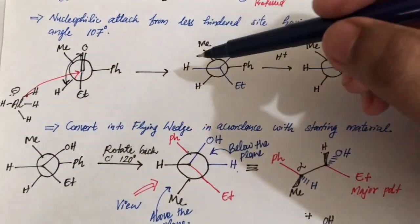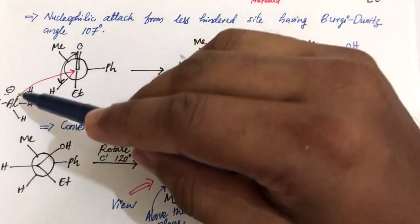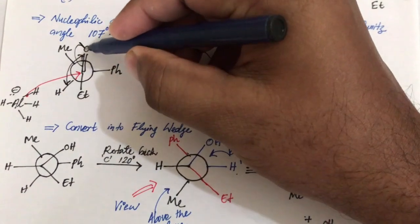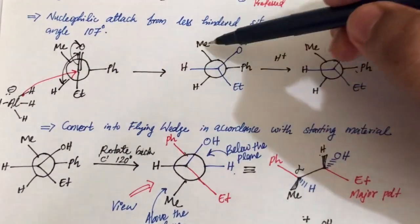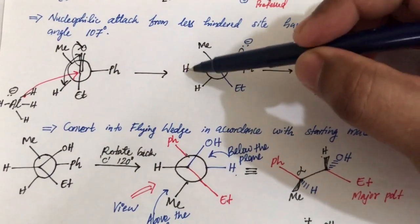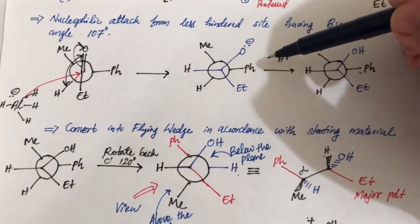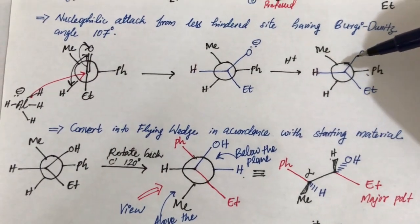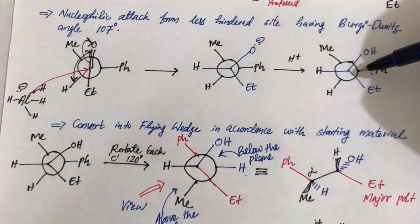The nucleophile attacks and this bond shifts. There is no change in the back carbon — it still has Me, Ph, and H. The incoming nucleophile hydrogen bonds to carbon, giving an alkoxide O⁻. On protonation, we obtain our product. However, we need to express this product in flying wedge notation.